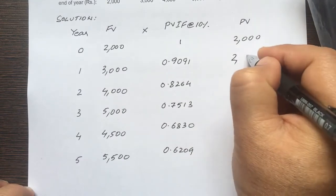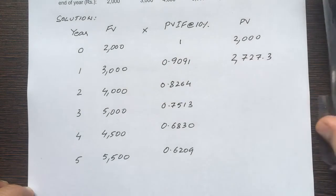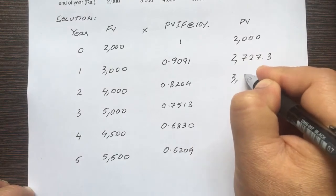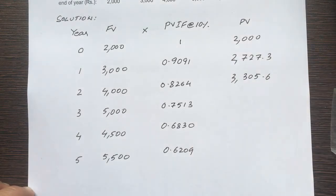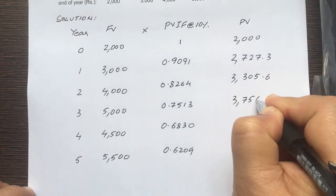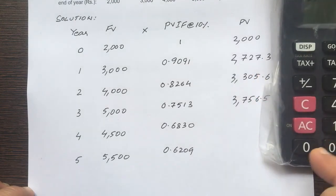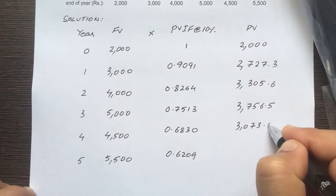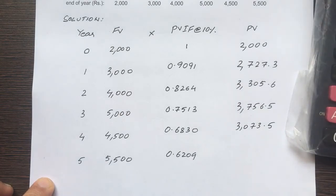Then year 2: 4,000 times 0.8264 equals 3,305.6. Year 3: 5,000 times 0.7513 equals 3,756.5. Year 4: 4,500 times 0.683 equals 3,073.5. And lastly, year 5: 5,500 times 0.6209 equals 3,414.95.